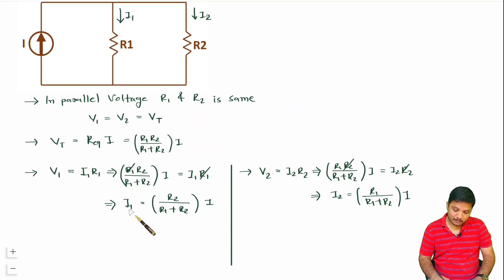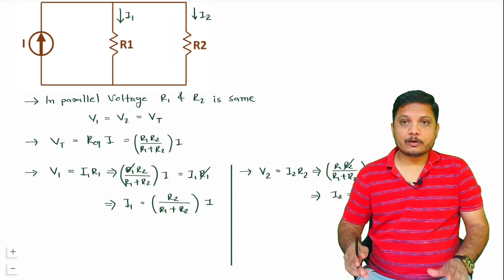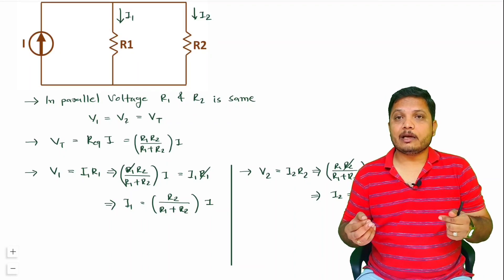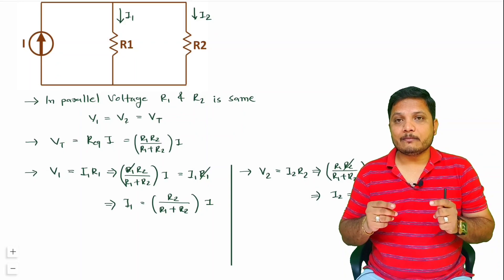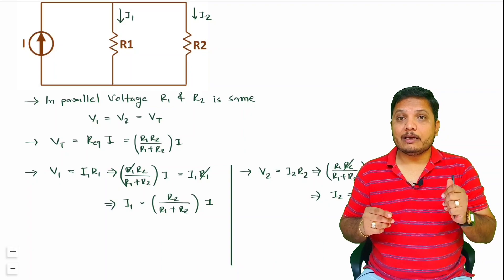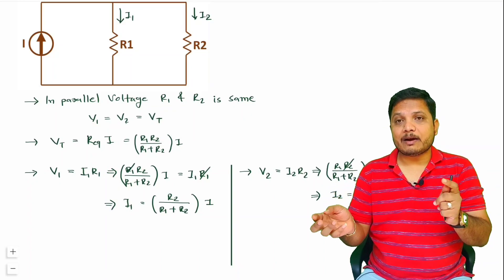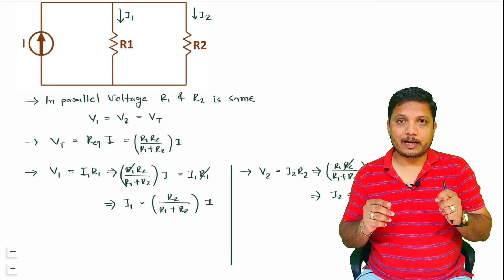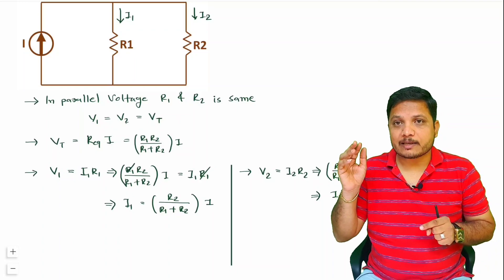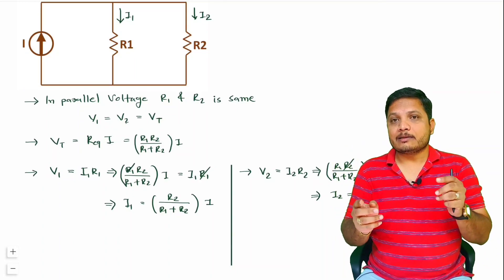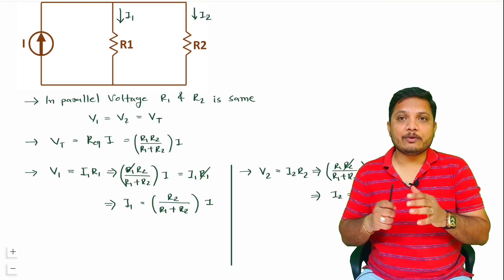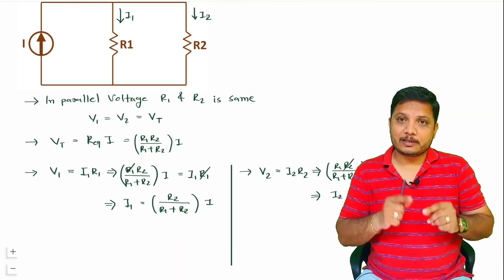So we now have the values of I1 and I2. For two resistors in parallel, the current through resistor 1 is the other resistance divided by the total resistance, times the total current. And the current through resistor 2 is the resistance of resistor 1 divided by total resistance times total current. That is how you apply the Current Divider Rule for two resistors.